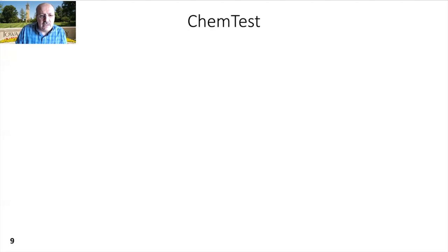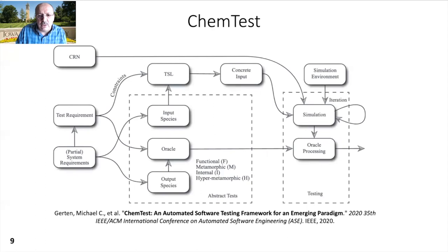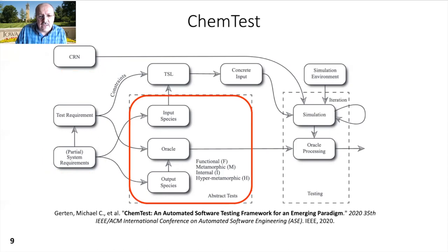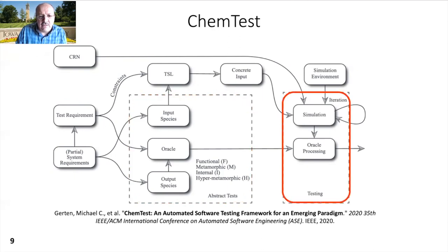In a recent work, Gertan et al. developed a testing framework called ChemTest. ChemTest starts with an existing CRN and a partial set of requirements. They first normalize these requirements and use properties to create abstract test cases. Then they evaluate the results of checking each test requirement against the simulation traces. However, this work only detects faults — in order to repair and fix them, you still have to do manual work. So we need a program repair framework.